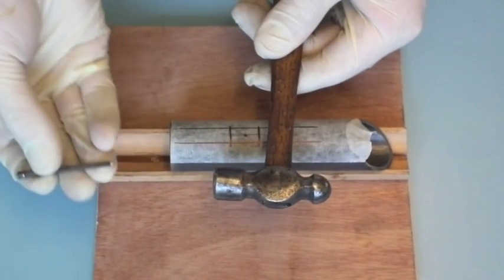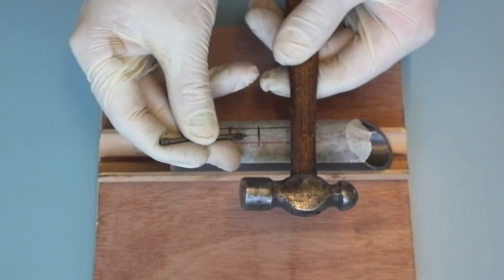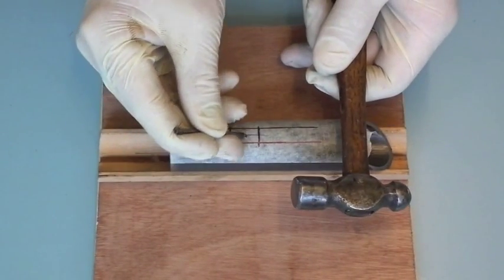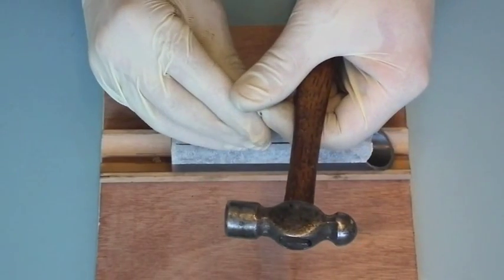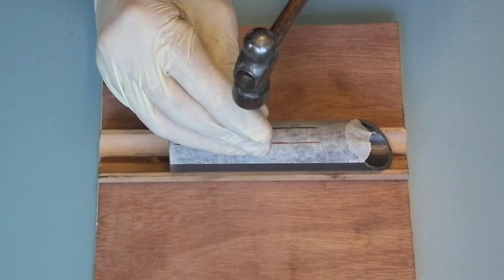And the masonry nail. So if you lay it on sideways so you can make sure that the tip is on exactly where you want it, and then bring it to the vertical, and then give it a nice firm clout.